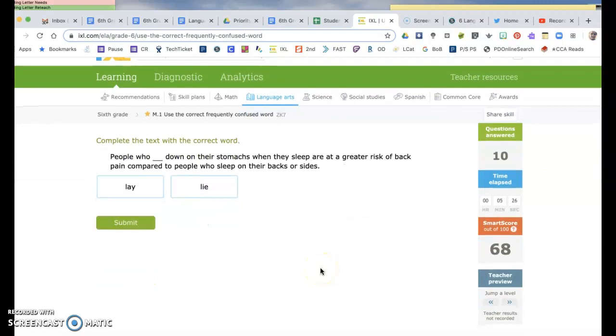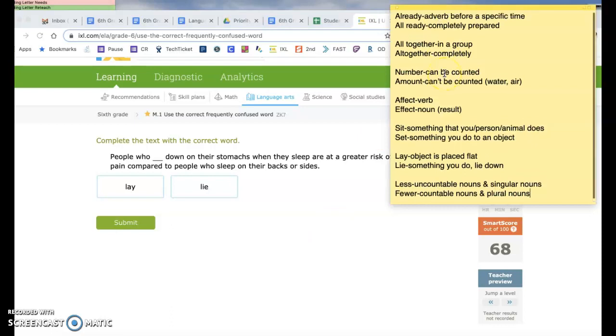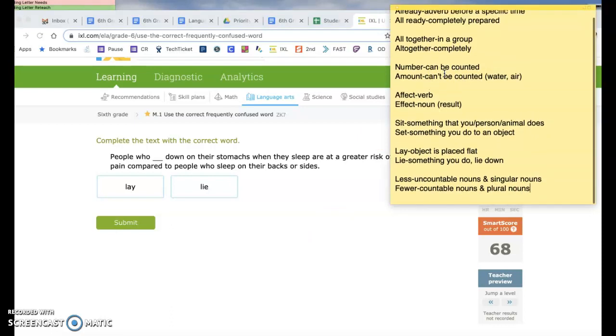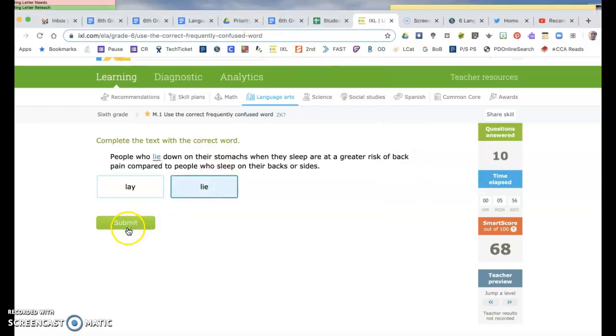People who lay down on their stomachs or lie on their stomachs. Well, we actually use this one wrong all the time or incorrectly. Lay is when you place an object flat, so I lay my keys on the table. I place them on the table. Lie is something that you do. So you're not supposed to say I'm going to go lay down. You're supposed to say I'm going to go lie down, because you're the person that does the actual thing.